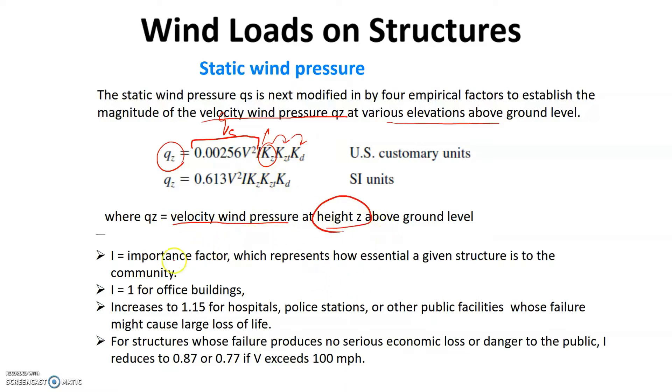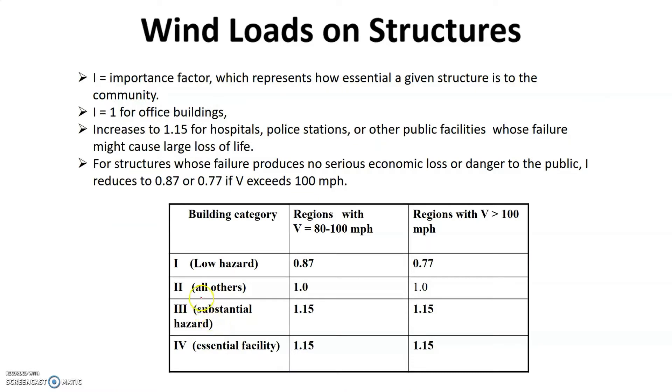I is the importance factor, which is one for office buildings and increases as the importance of the structure increases. For example, if we're talking about hospitals, police stations, or public facilities, this value is higher, which is 1.15.